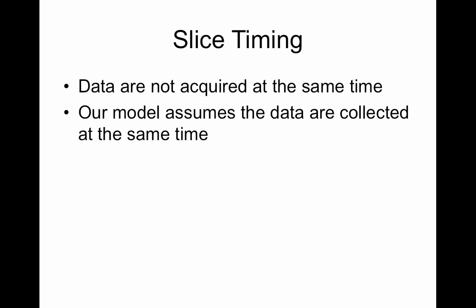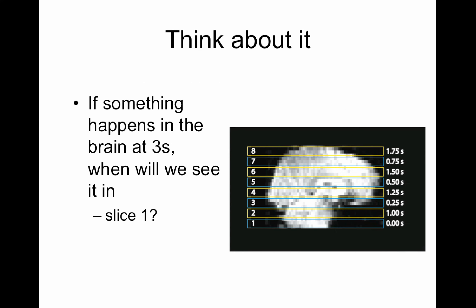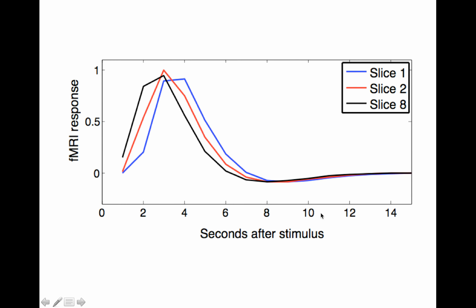When we set up our GLM the model assumes the same timing for all slices — so what are we going to do? There could be up to a two-second difference between slices. The idea is to fix this so that our model fits the data correctly. Instead of fixing the model, we're going to fix the data — that's at least one approach. If something happens at three seconds, we'll see it in slice one at around three seconds, but in slice two at four seconds.